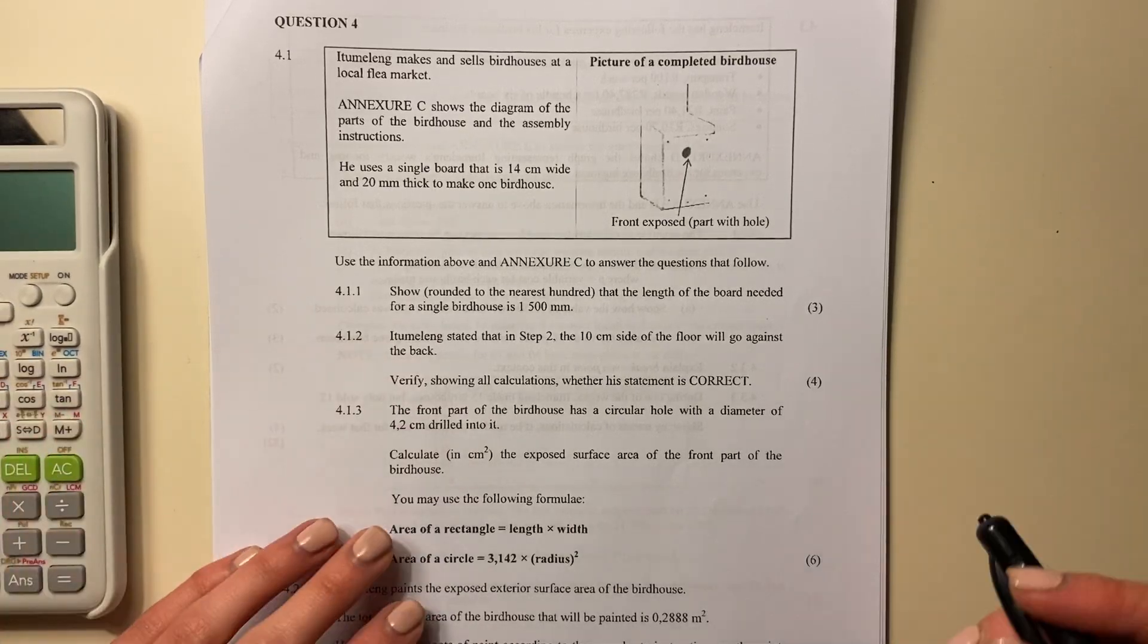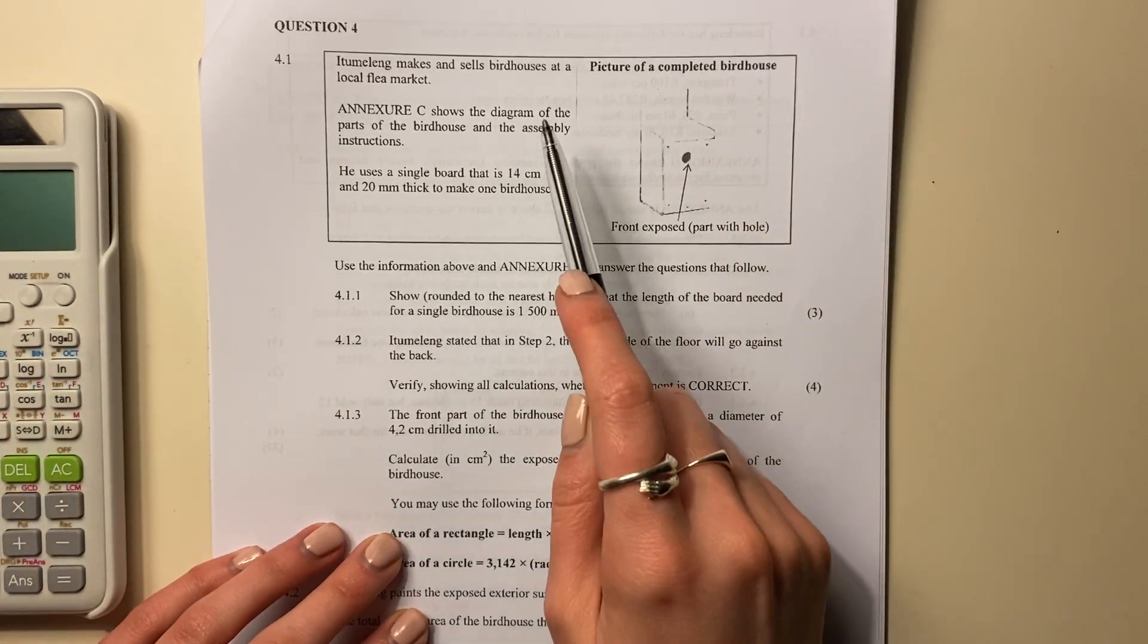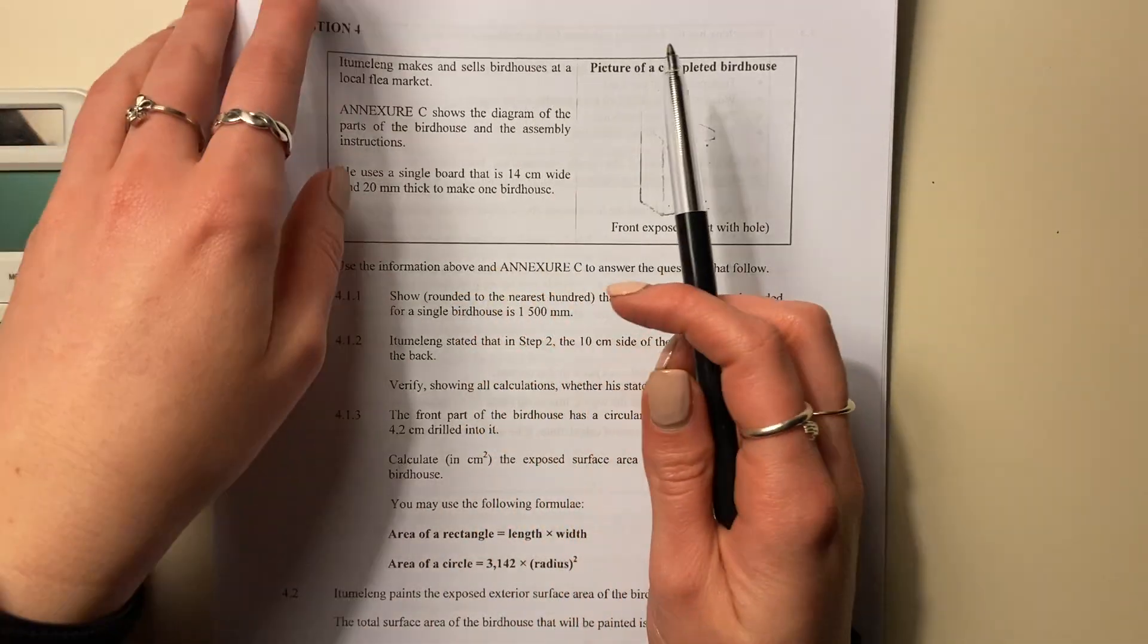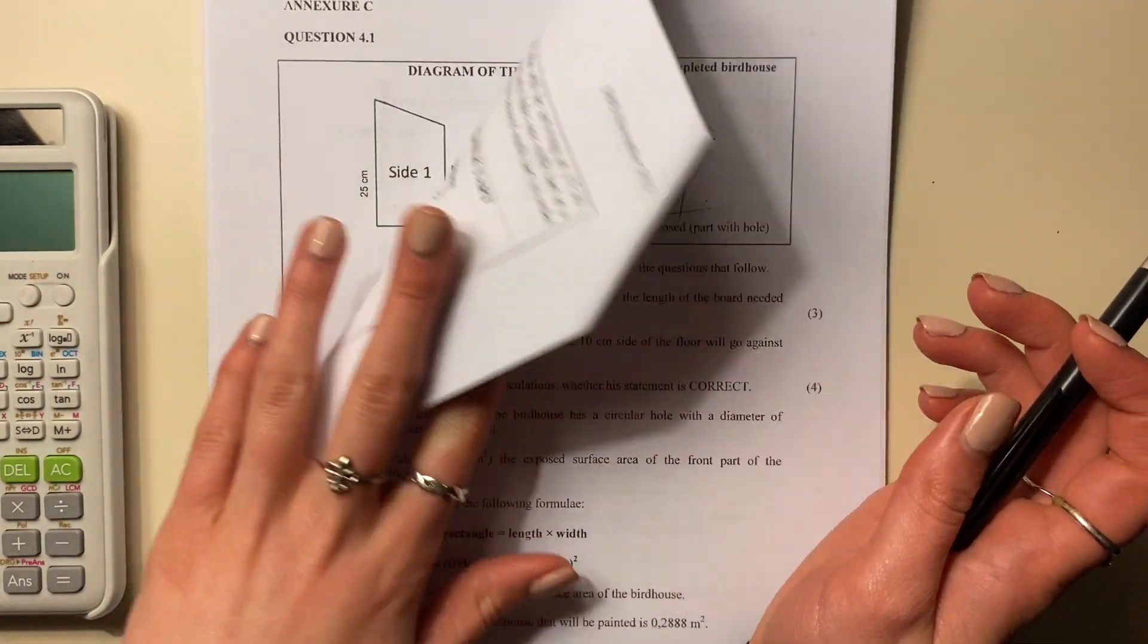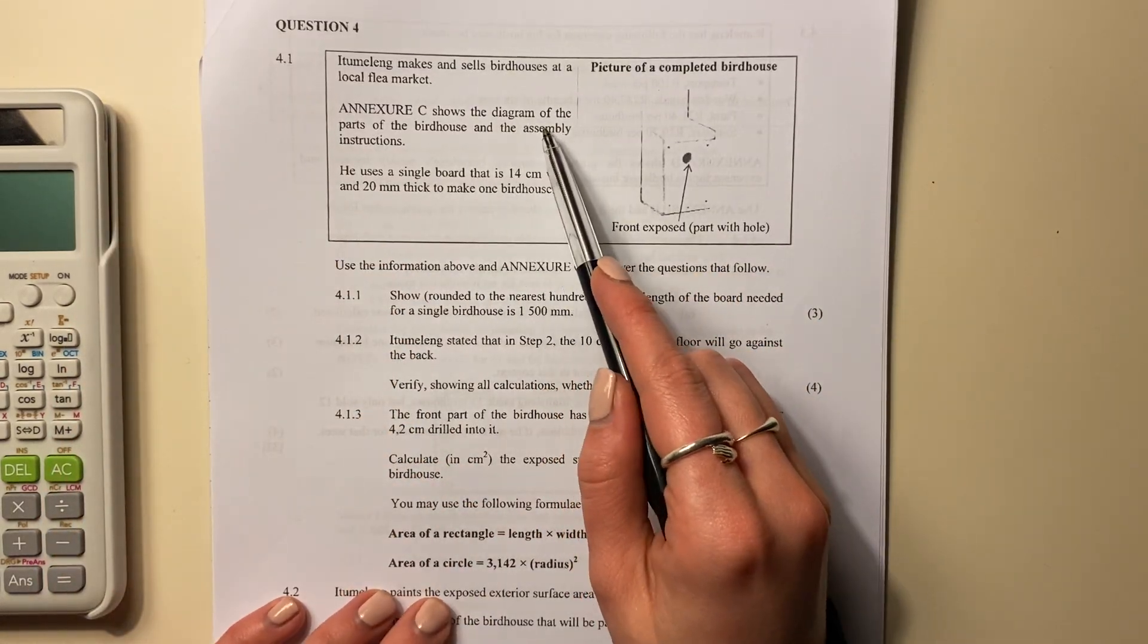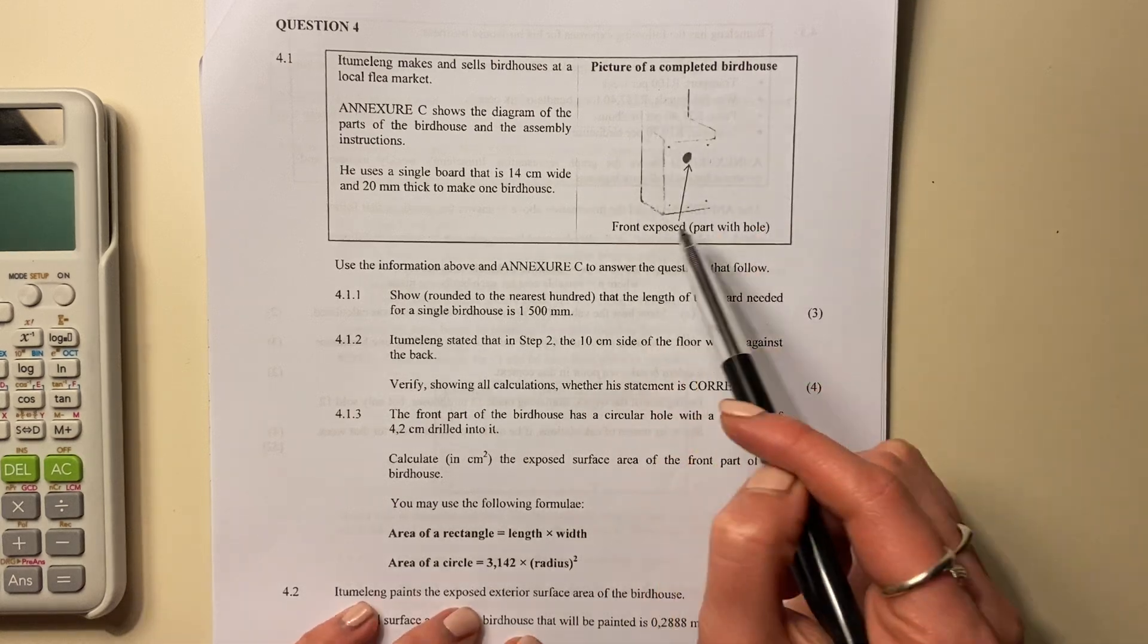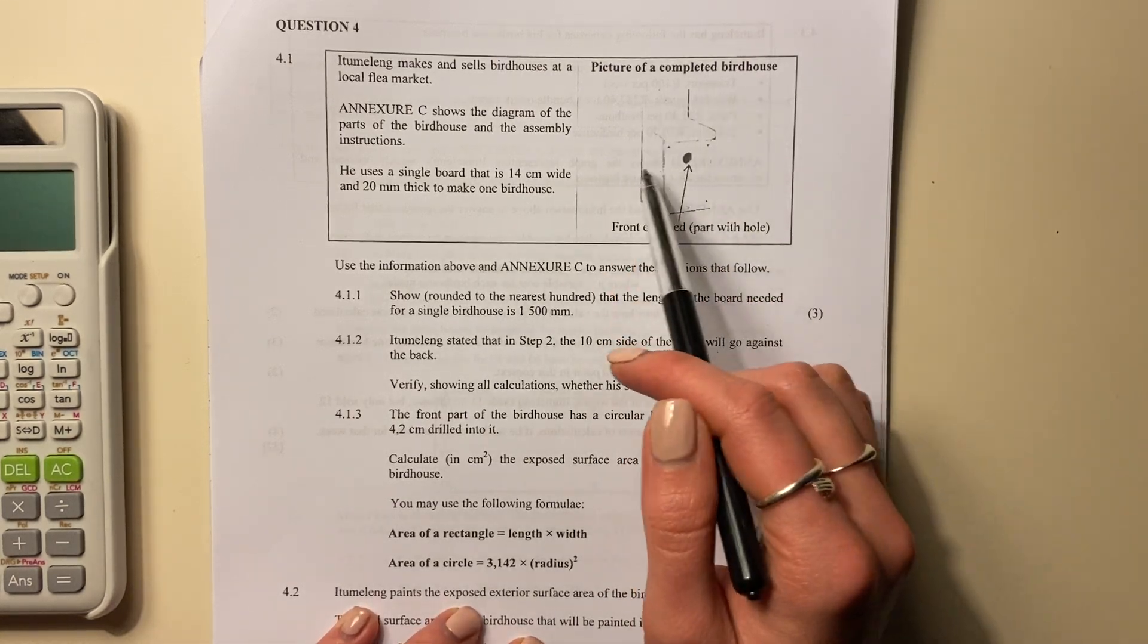Question four. Itumaleng makes and sells birdhouses at a local flea market. Annex C - whenever you see that, you go find it. There's Annex C. I have it on hand, right? Shows the diagram of the parts of the birdhouse and the assembly instructions. Okay, obviously your diagrams will be a bit clearer than mine.